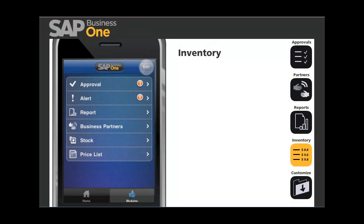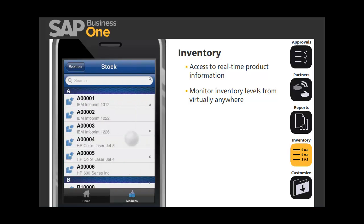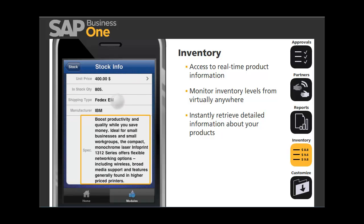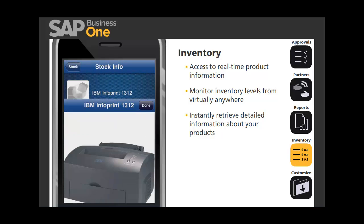When you need information, the SAP Business One mobile application delivers, enabling you to access real-time product information and monitor inventory levels from virtually anywhere. In an instant, you can retrieve detailed information about your products, including pictures, available quantity, manufacturer, and product specification, as well as purchasing and sales price information. It's all in the palm of your hands.